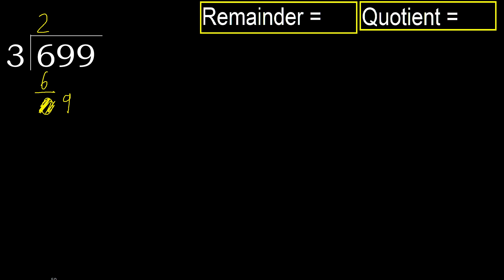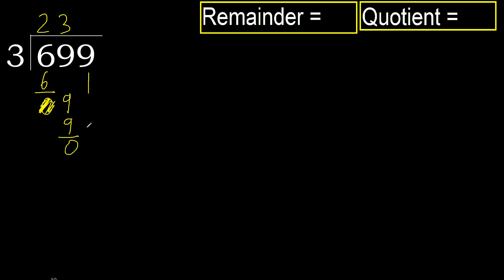Eliminate 0. Bring down 9. 3 multiplied by 4 is 12, which is greater. Multiply by 3: 9. It is not greater. Subtract. Next.